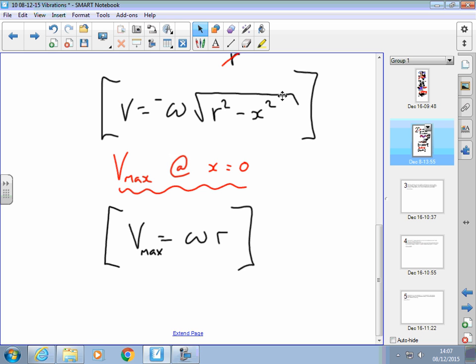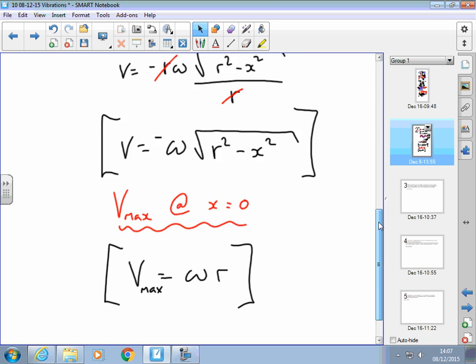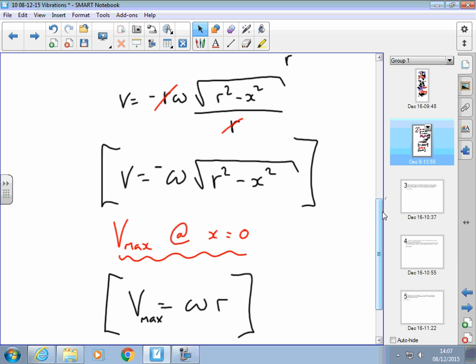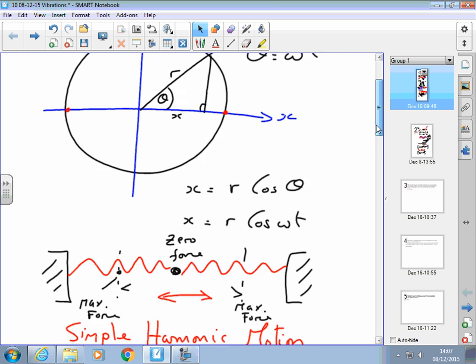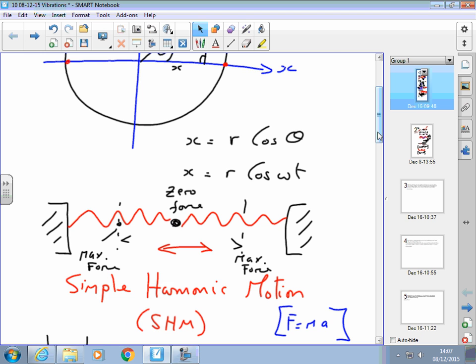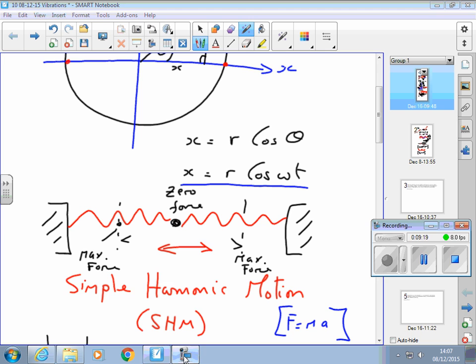So we've got three now. We've got this. V max equals omega r. That v equals omega root r squared minus x squared. And that x equals r cos omega t. Three useful formulae. Thank you.